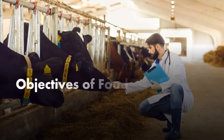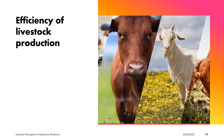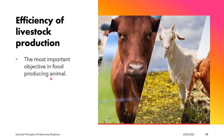The next section will talk about the objectives of food producing animal practice. The first objective is efficiency of livestock production, considered the most important objective. Animal production is described as a value-added system, meaning the value of the animal changes according to its life stage.